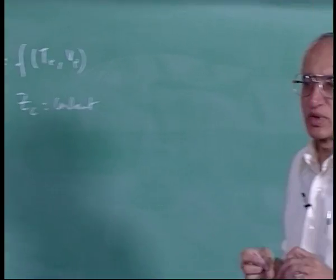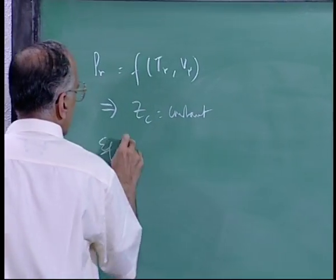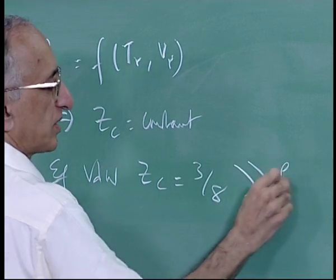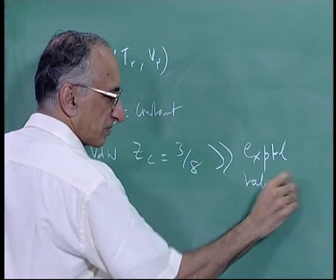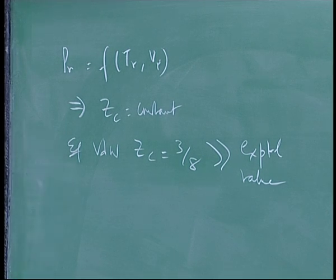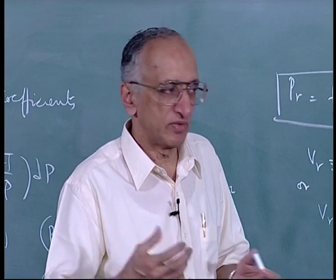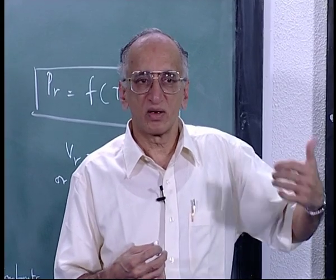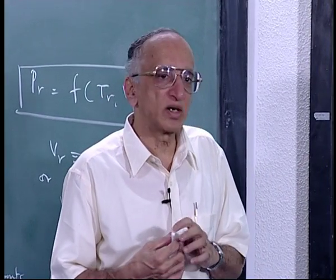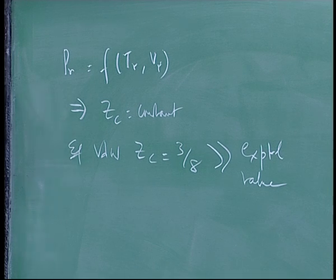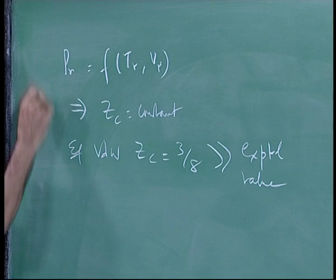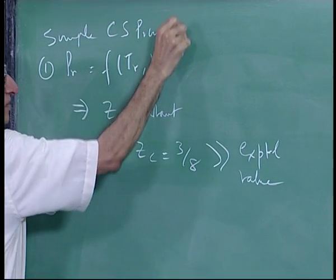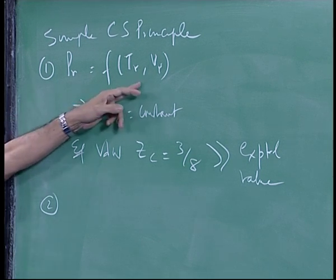In the case of Van der Waals, z_c comes out to be 3/8, which is much greater than the experimentally observed value. Experimental values actually vary between about 0.2 and 0.35. For inert gases — argon, krypton, neon, xenon — and methane, z_c is about 0.27, and these can be correlated very well. Then you start having departures. This is called the simple corresponding states principle for two-parameter equations of state.